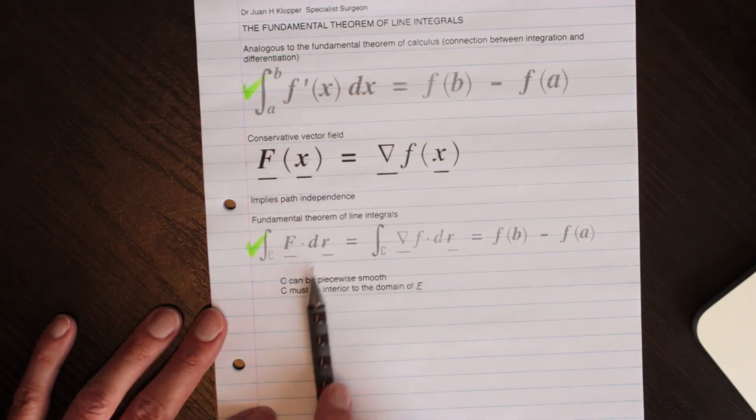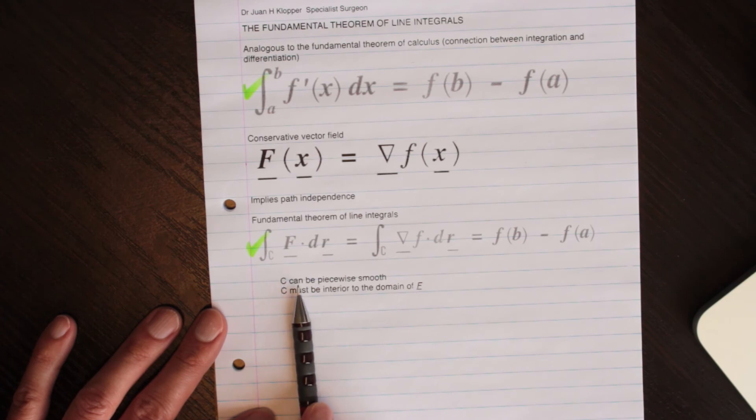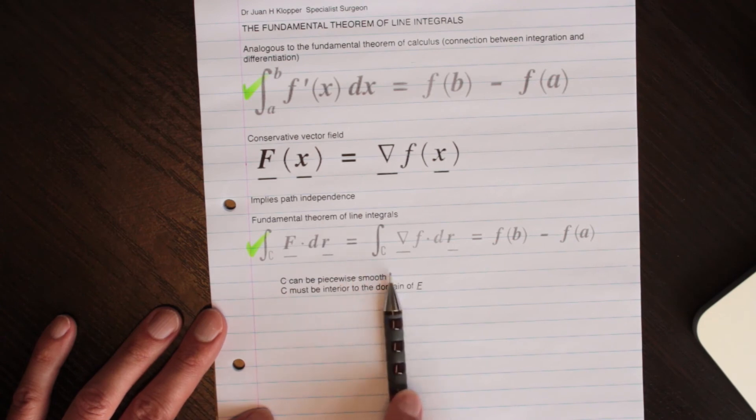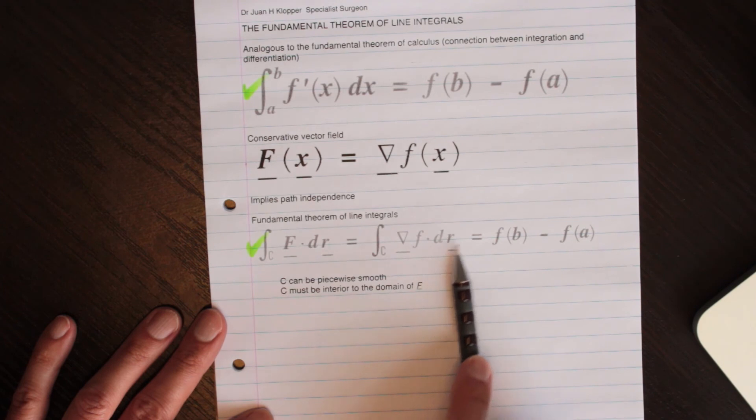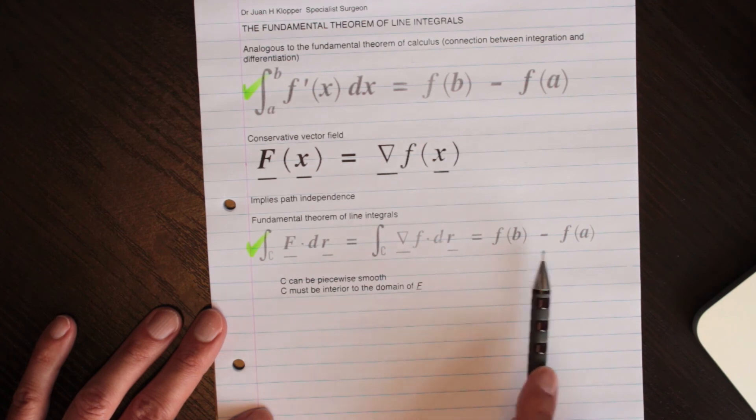And lastly, we just have to mention that the c, this path that's taken can be piecewise smooth as well. Smoothness means you can integrate it all over. In this part where it is smooth, this piece where it's smooth, it means it's integratable over that whole path.